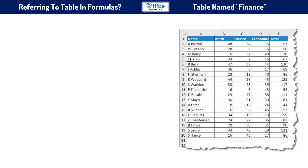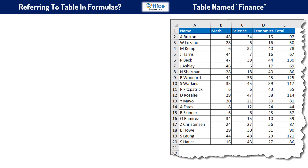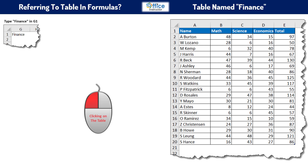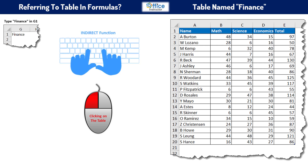How to select a table or part of a table in a formula. In this worksheet I have a table and I named it 'finance'. I also wrote 'finance' in G1. I can refer to the table or part of the table in any formula by typing an equal sign followed by clicking, or by using the INDIRECT function.